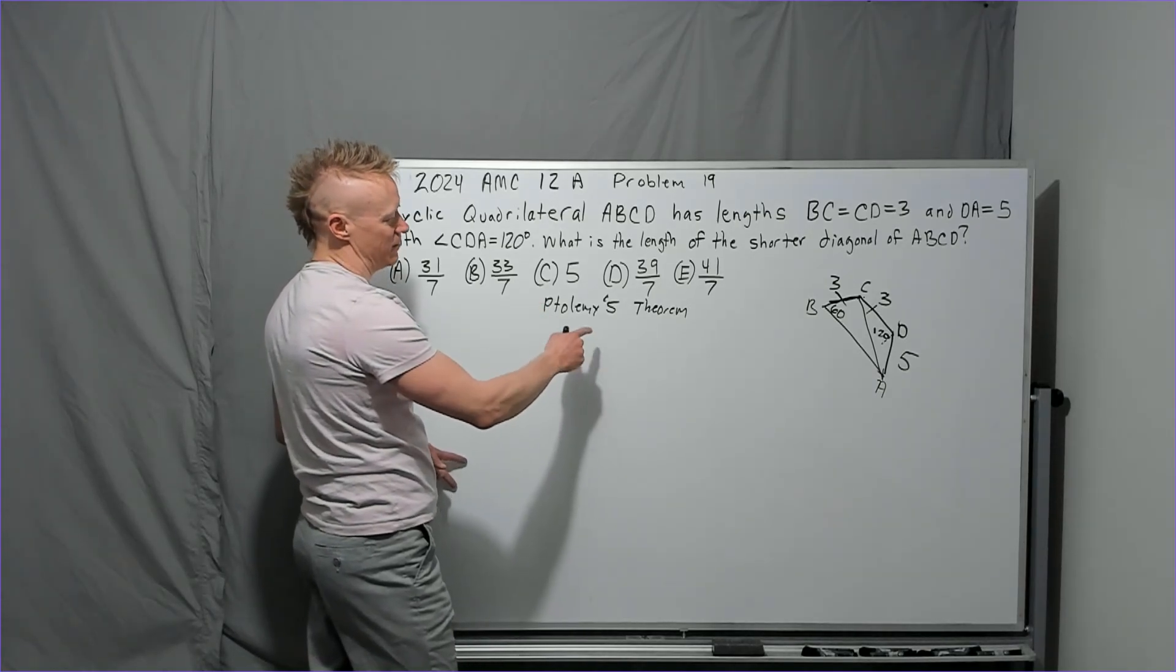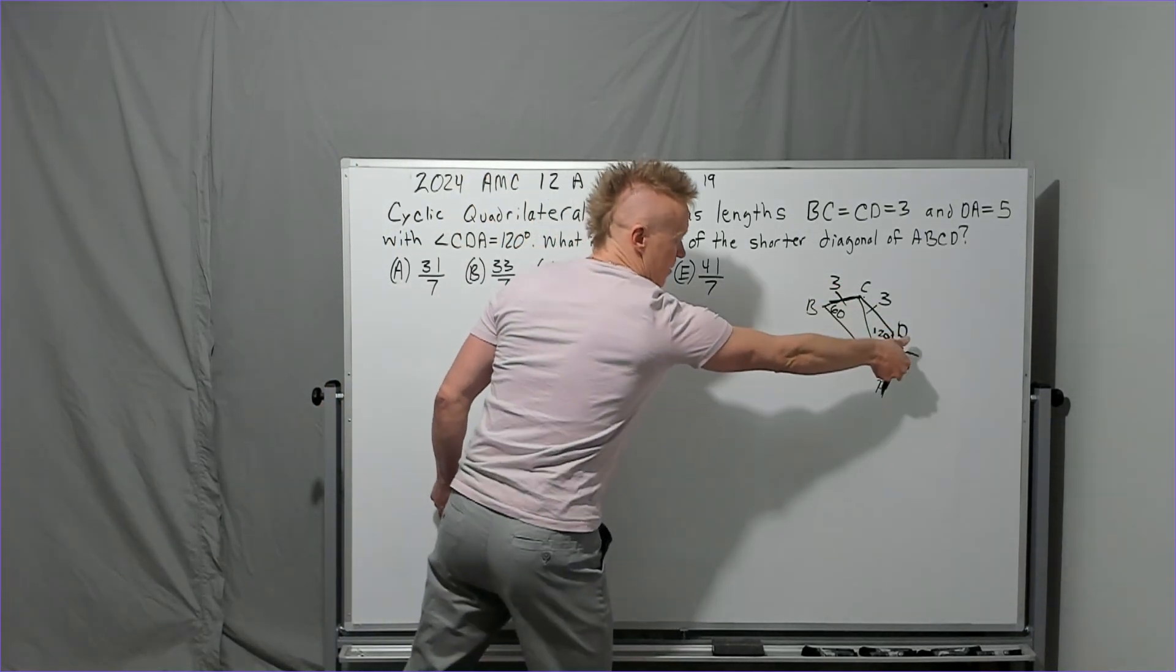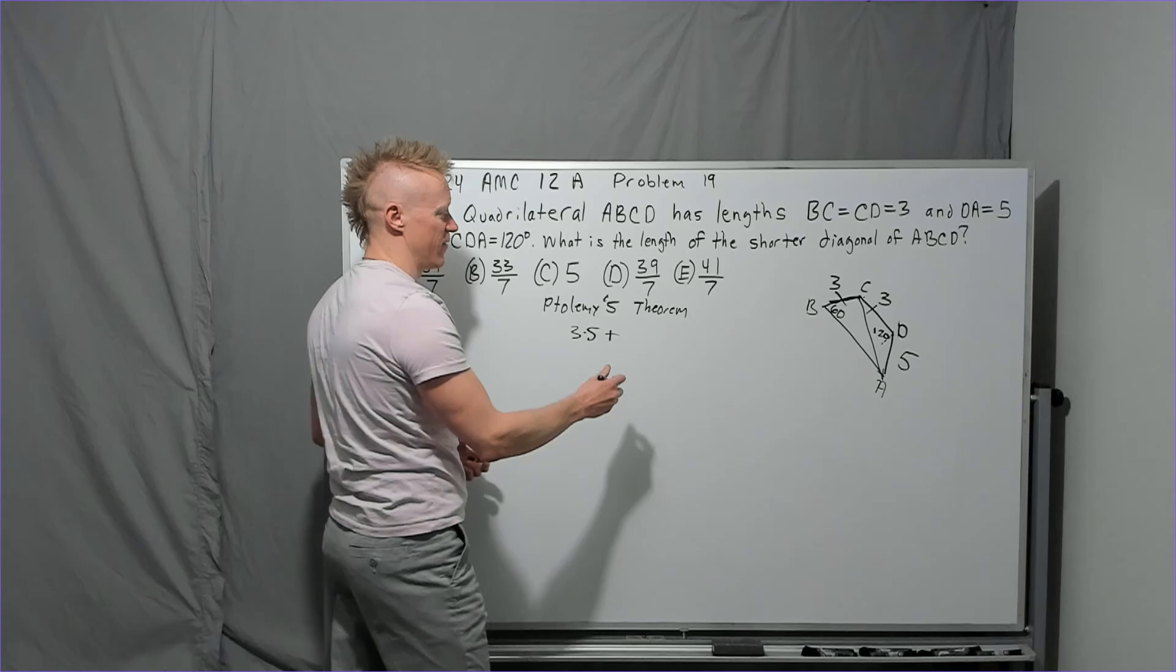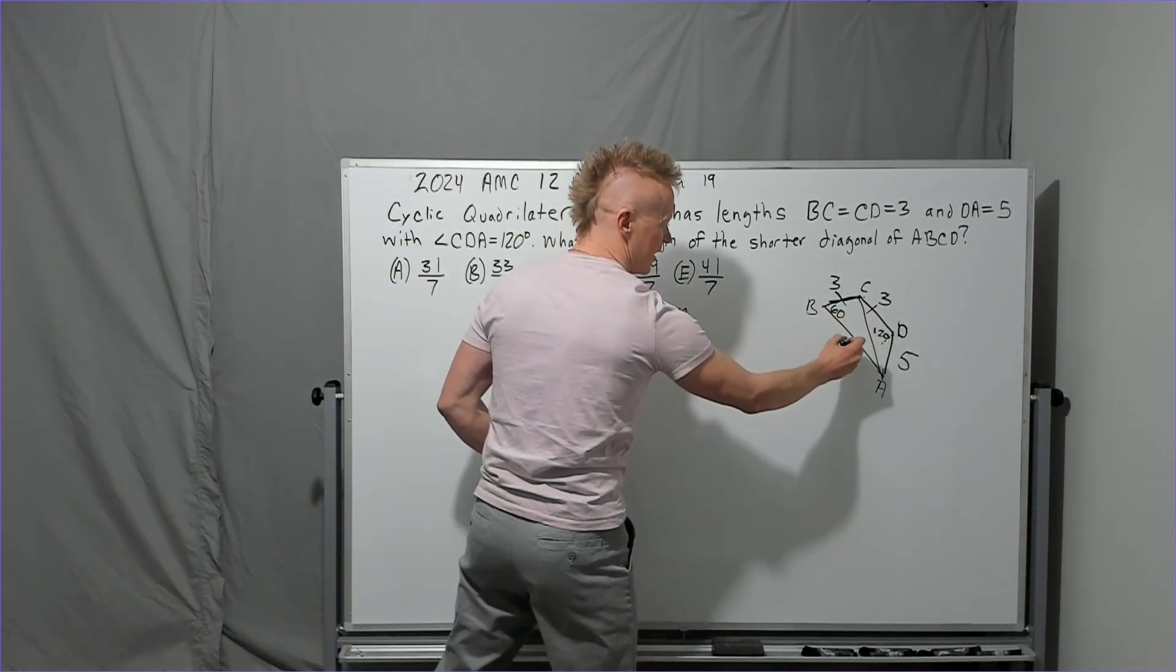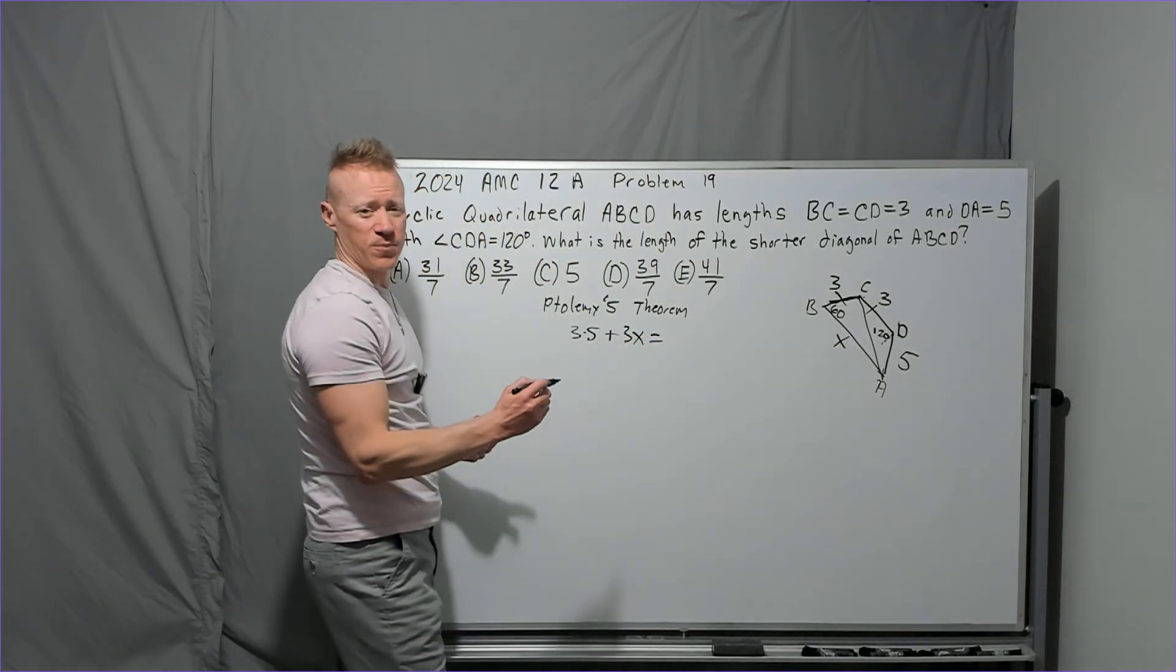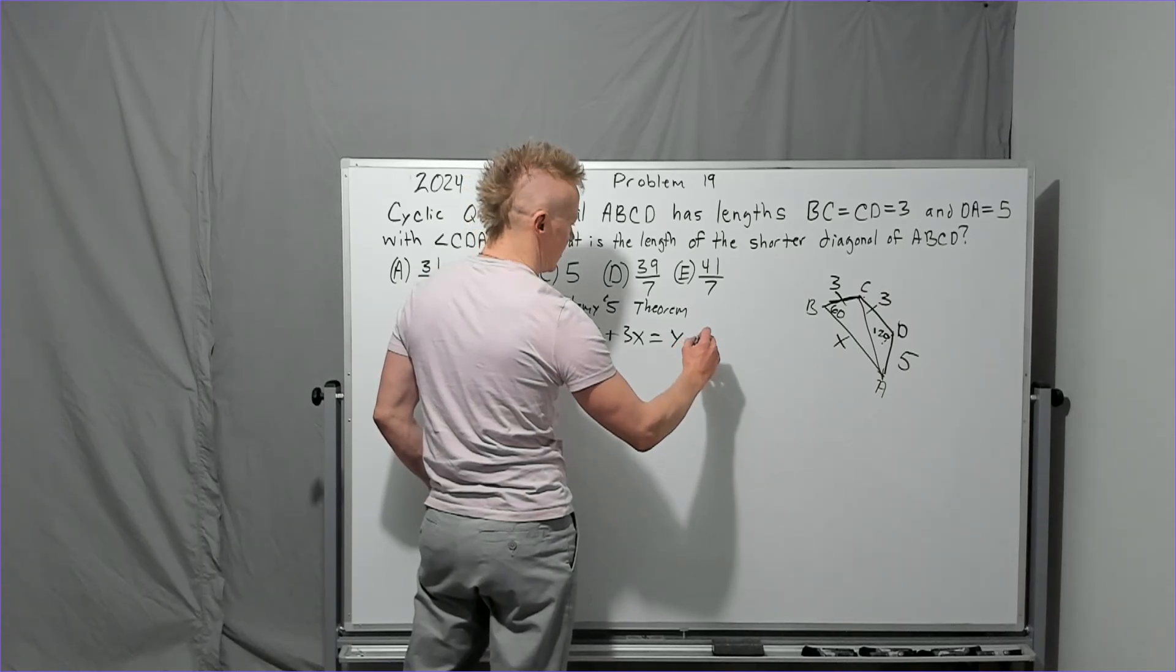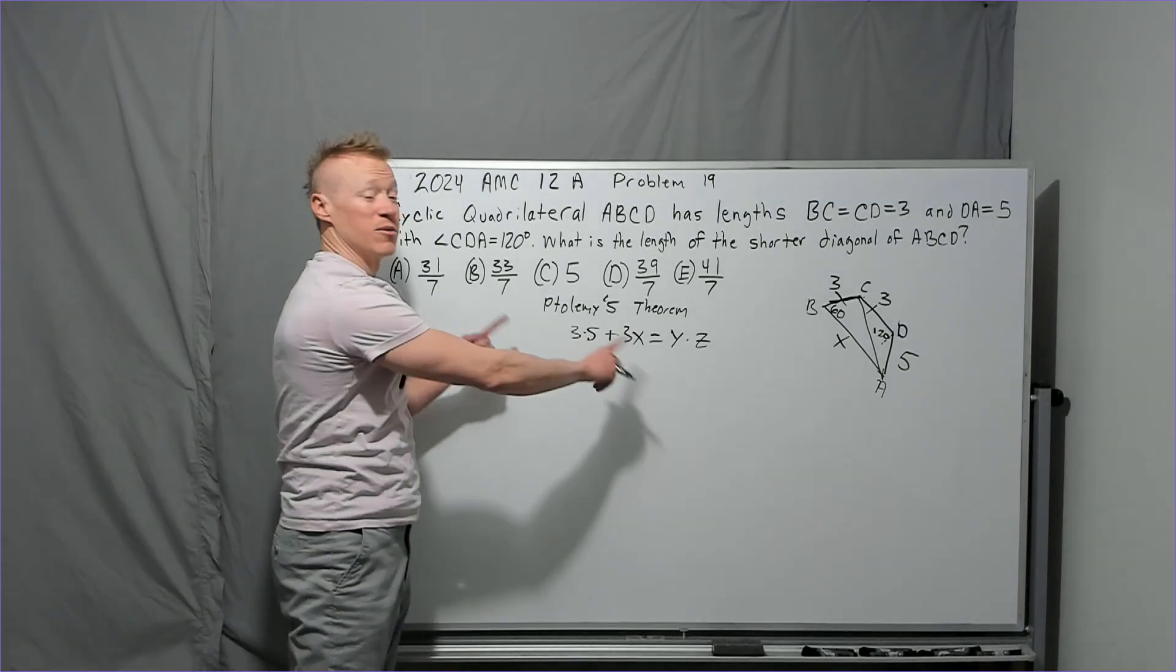So then what? Ptolemy's theorem says that the product of opposite sides, that would be three times five only for cyclic quadrilaterals, three times five, the sums of the products of opposite sides. That's the proper way I'm going to say it. Sums of products of opposite sides. So three over here times this unknown X value. This needs to equal the product of the diagonals. So we don't know what AC is, but we could say AC is Y and BD will be Z. Diagonal one, diagonal two, who cares. But that's the general idea.